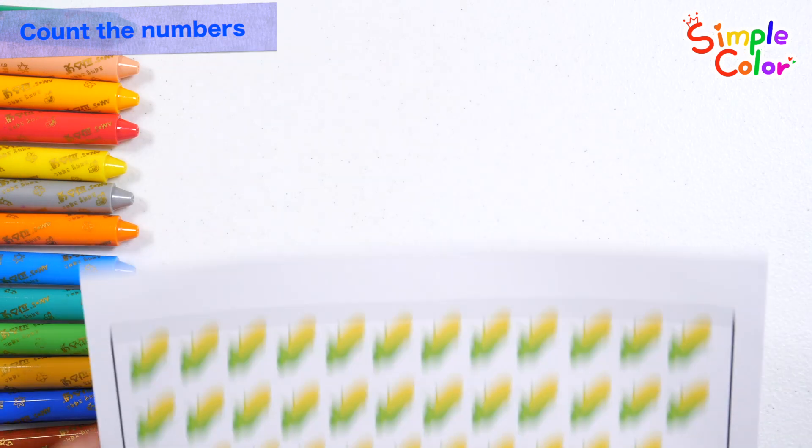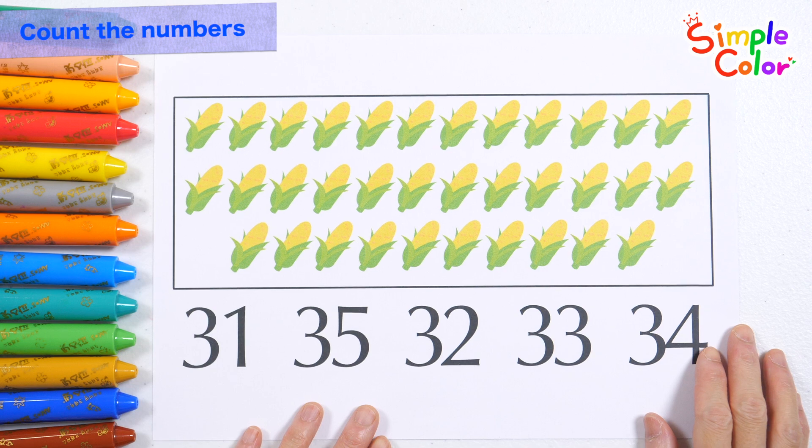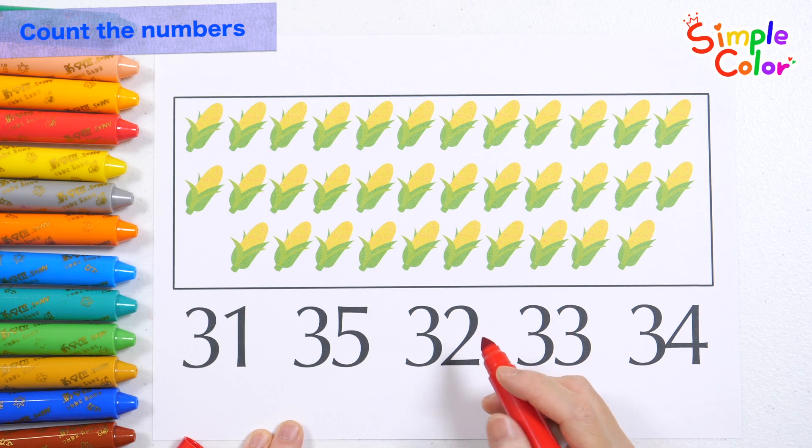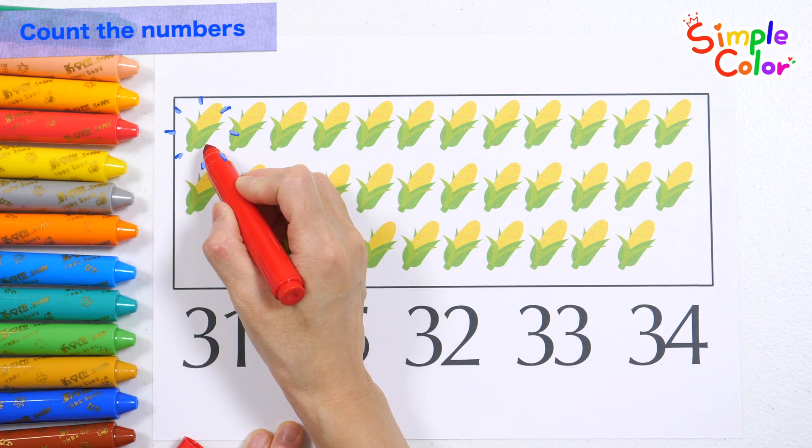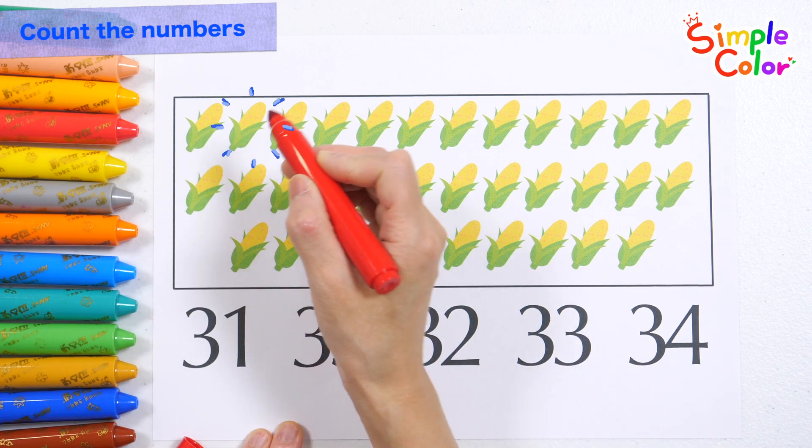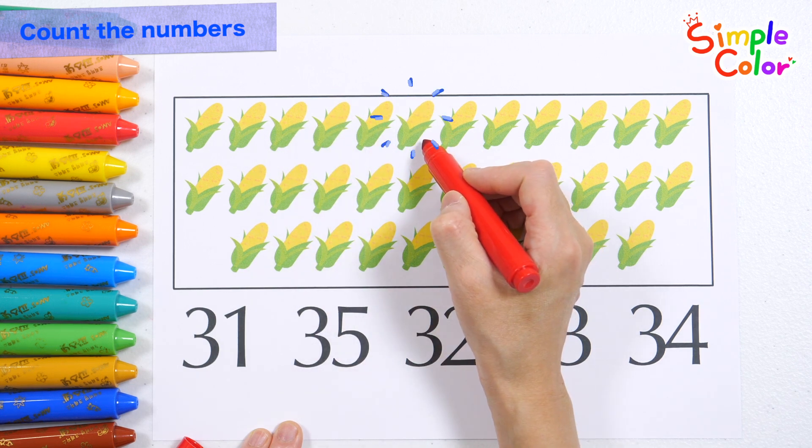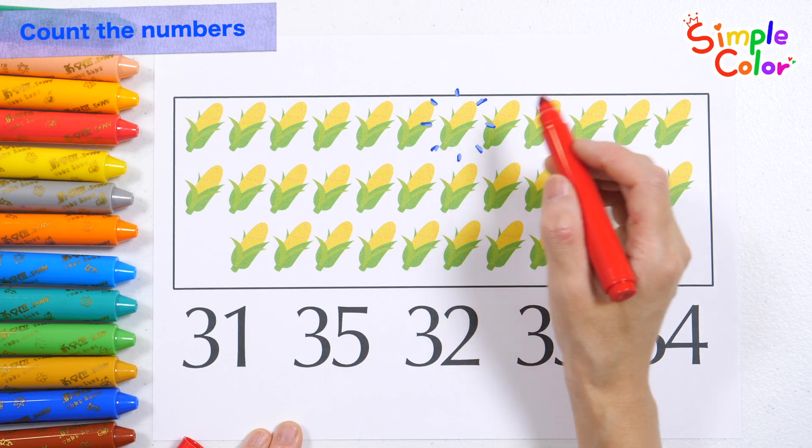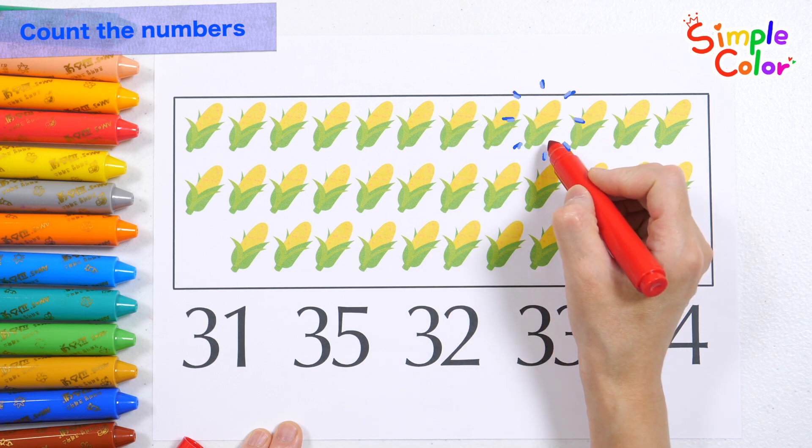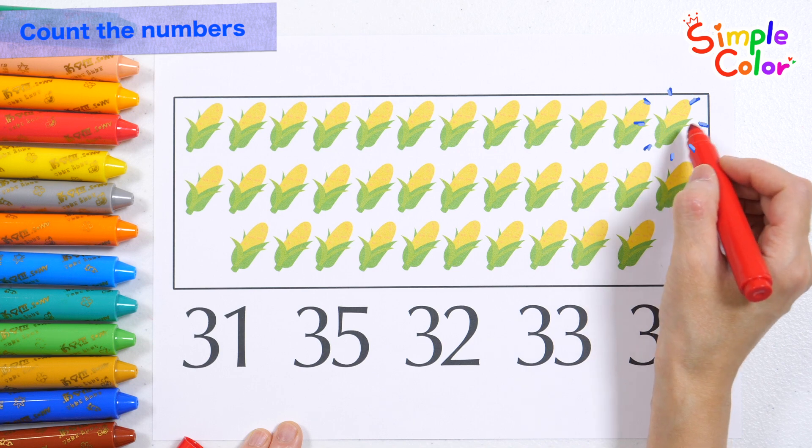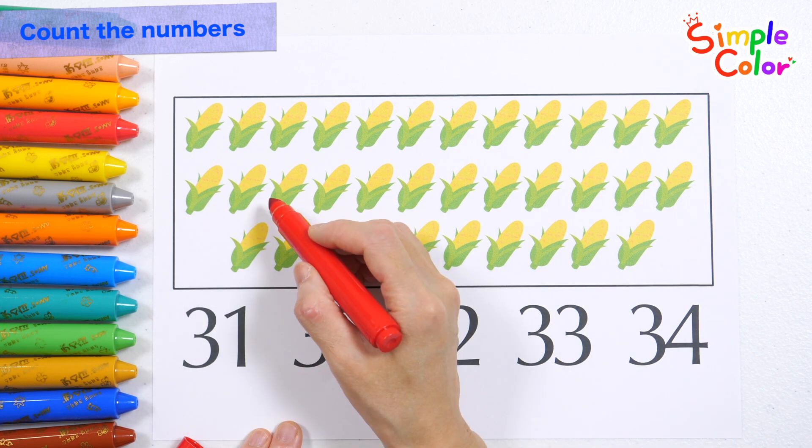Let's learn how to count by counting the pictures one by one. How many corns are there in total? Shall we count them one by one? 1, 2, 3, 4, 5, 6, 7, 8, 9, 10, 11, 12, 13, 14.